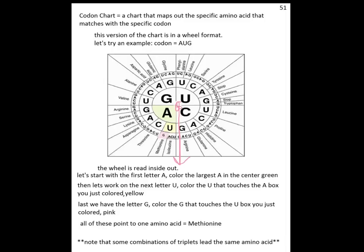So again, A, U, G. We're going to use the same colors as we did last time, green, yellow, and pink. So again, first letter is A. Color the largest A in the center, green. So there it is.